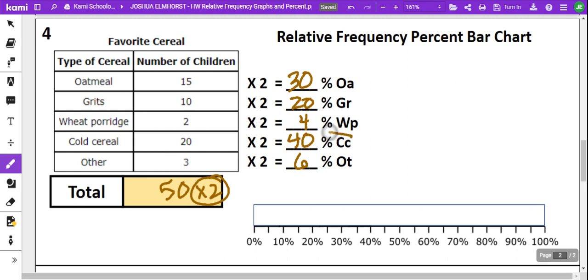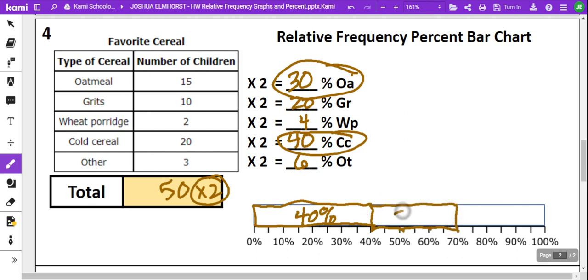I like to start with the greatest. So we got 40%, and then 30%. So we're going to go 10, 20, 30. And next is 20. I'm going to go 10, 20.